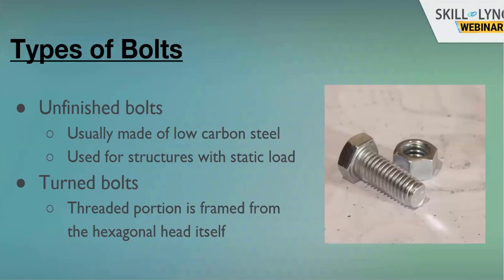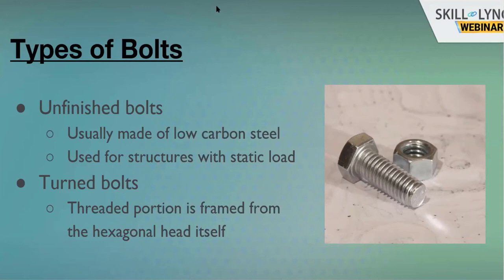There are four major types of bolts in the industry. First, unfinished bolts — made of low carbon steel (around 1% carbon content), used for static loads where the load remains constant. Second, turned bolts — commonly available in the market with a hexagonal head; the specialty is that there is no shank portion, the entire length is threaded.